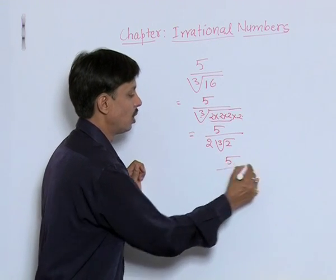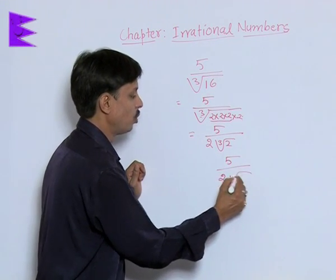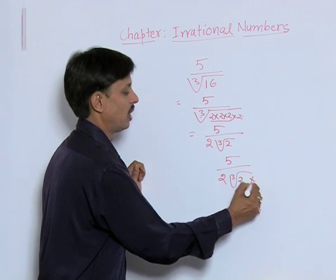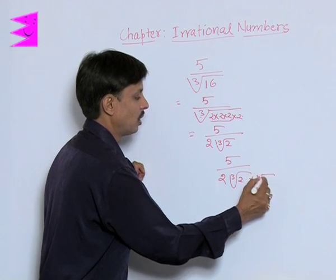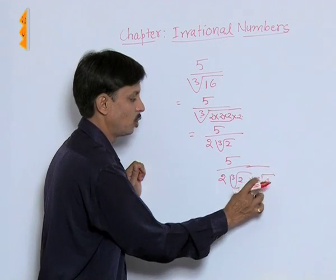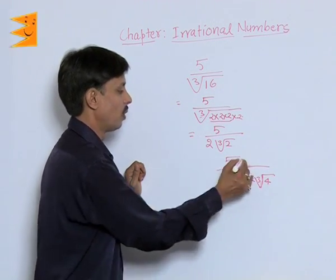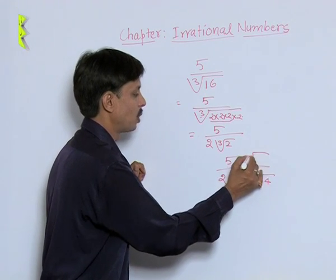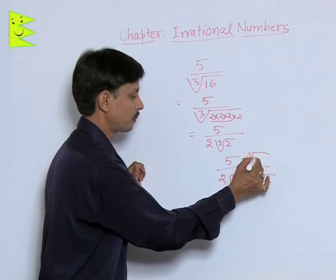If I ask you to multiply numerator and denominator both by cube root of 4. If I multiply by it, cube root of 4 in the denominator then numerator will also be multiplied by cube root of 4.